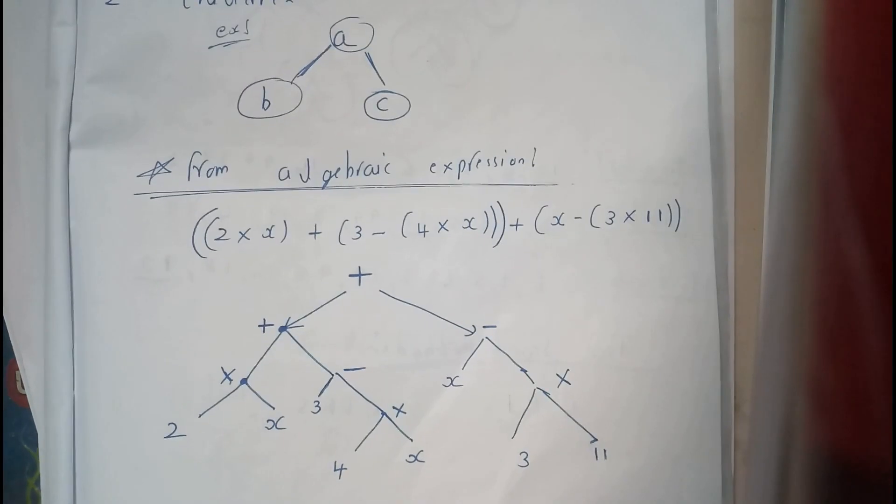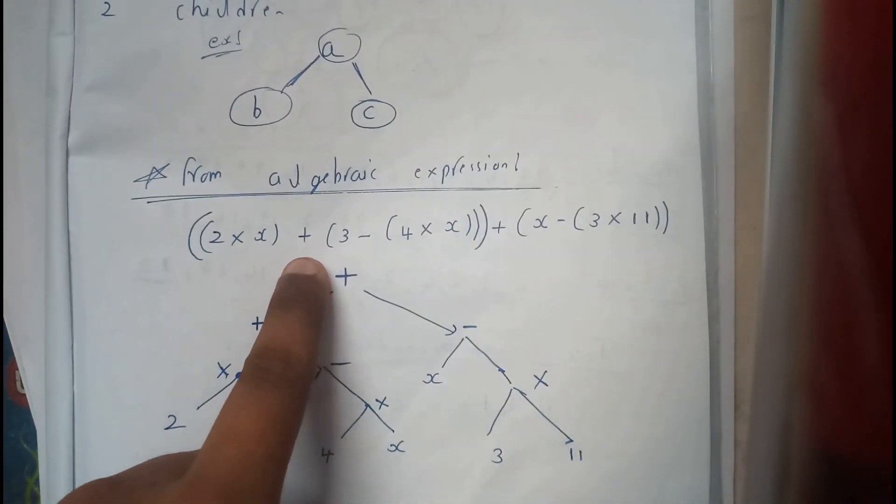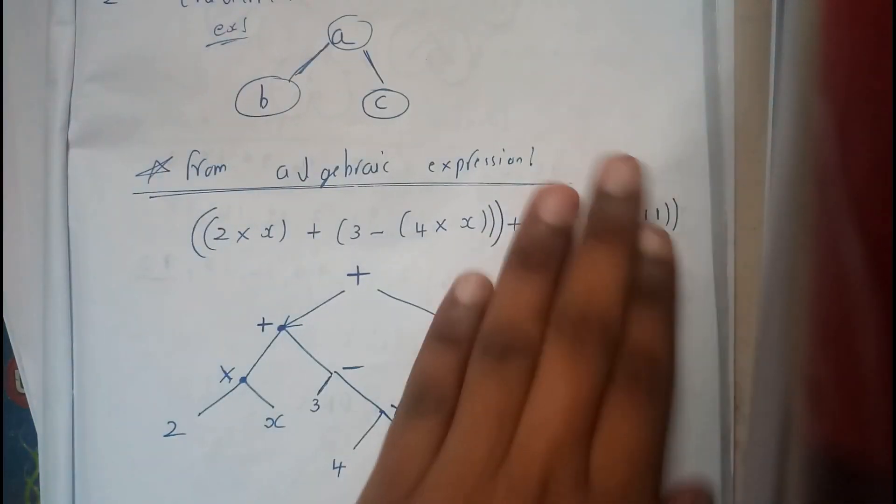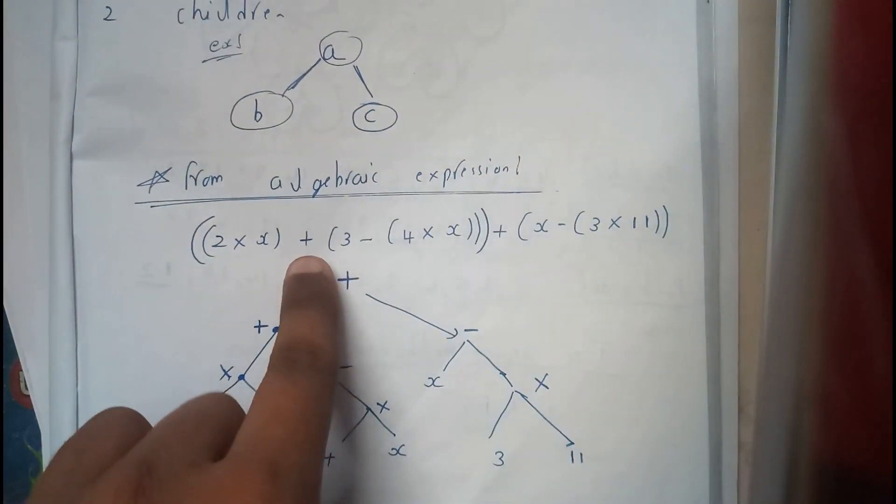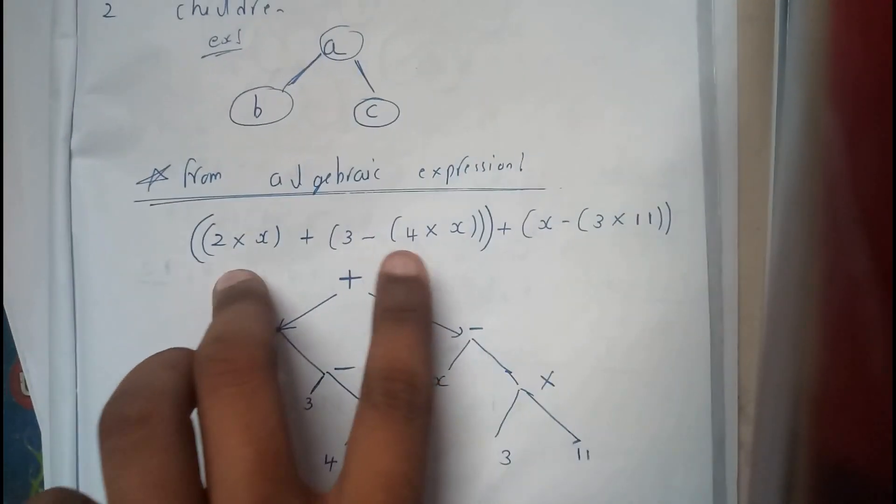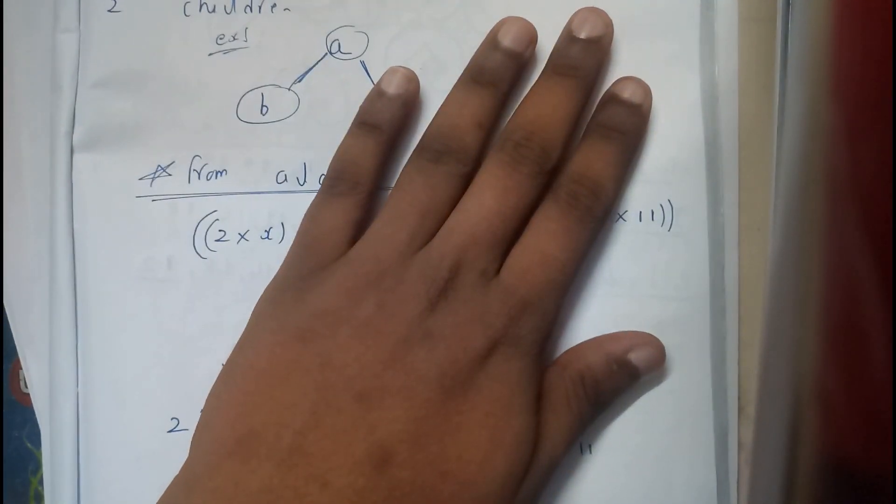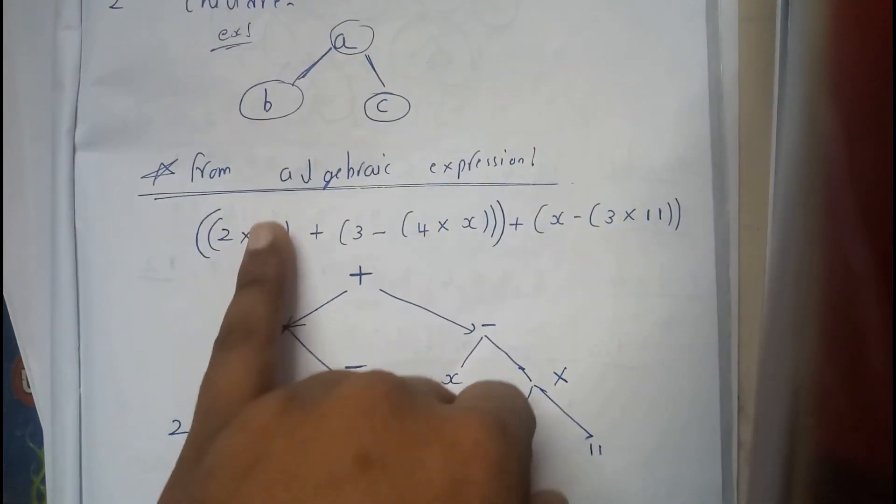Now continue to find the separators. Let's do the left side first, then go to the right side. In this left part, what is the separator? Again we have the separator plus. This is the left side, this is the right side. And on the left side, what is the separator? Star for multiplication. Left is 2, right is 4.